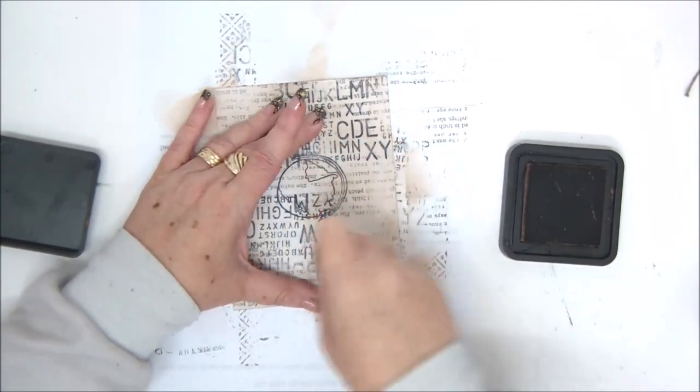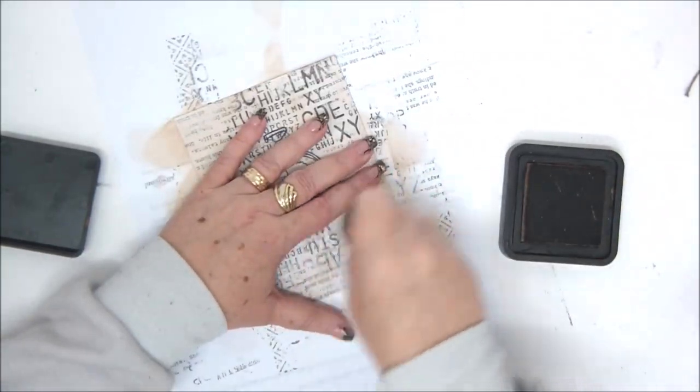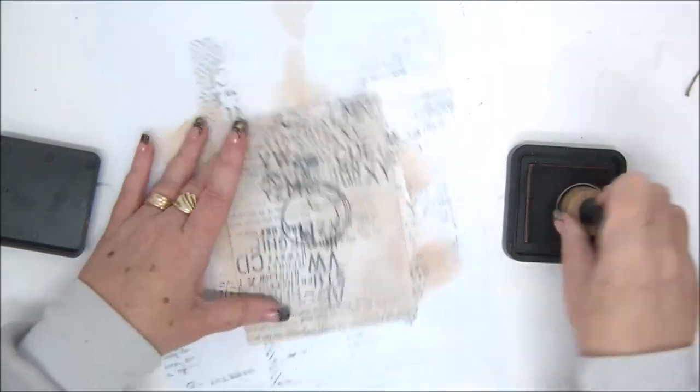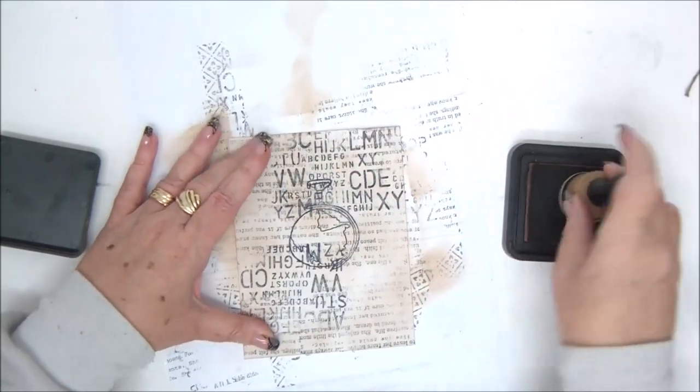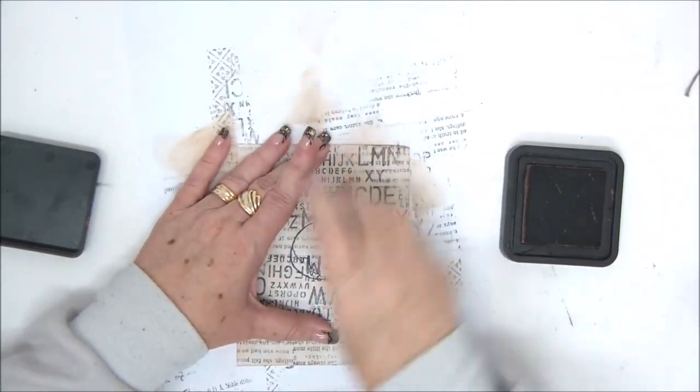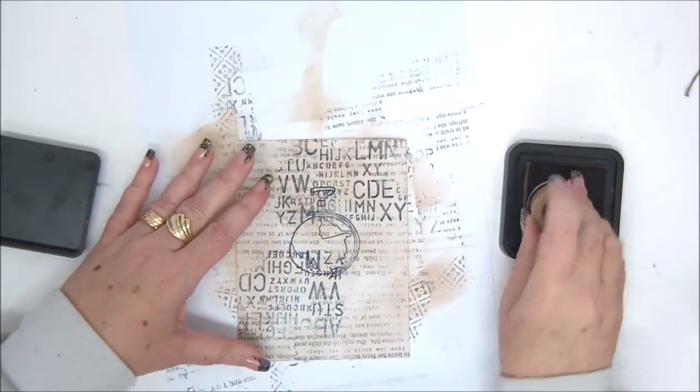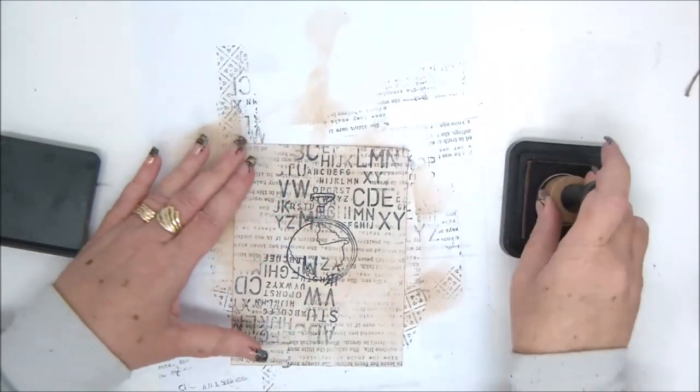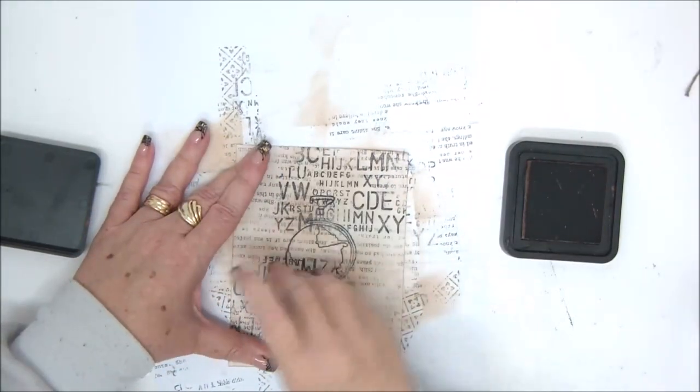So I have that blending tool, it's a sort of a handle with a replaceable sponge at the end, and I can add the ink with it. Simply in circular motion add the ink, and basically I'm coloring the white paper.